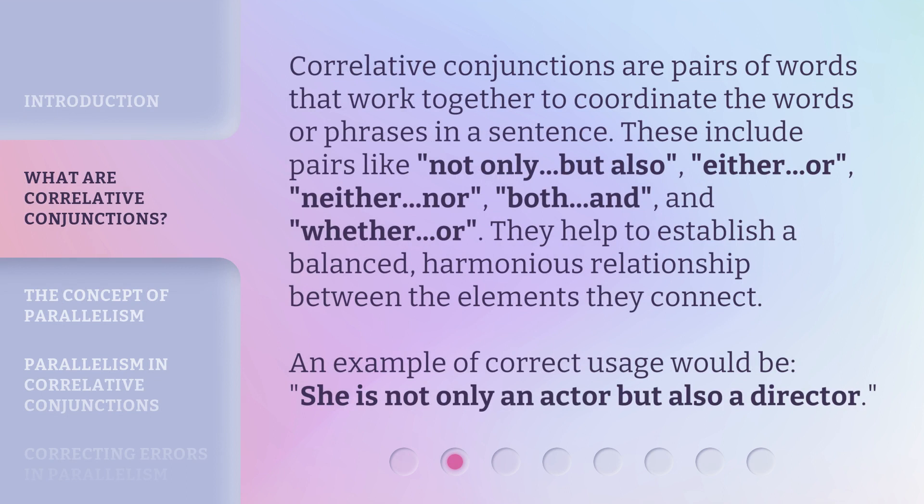Correlative conjunctions are pairs of words that work together to coordinate the words or phrases in a sentence. These include pairs like: not only...but also, either...or, neither...nor, both...and, and whether...or. They help to establish a balanced, harmonious relationship between the elements they connect. An example of correct usage would be: she is not only an actor but also a director.